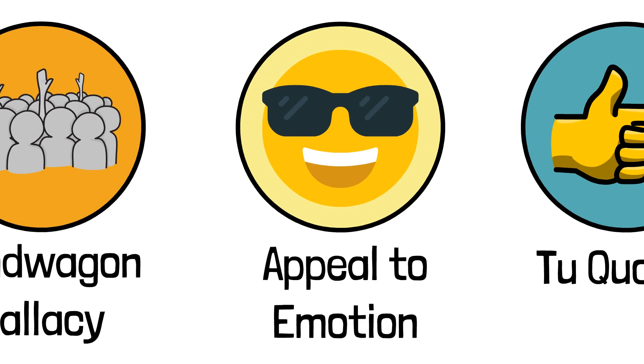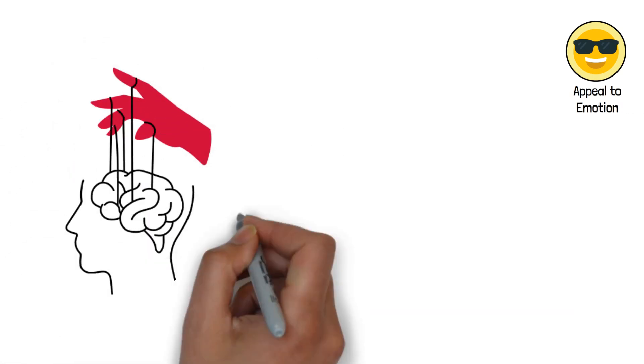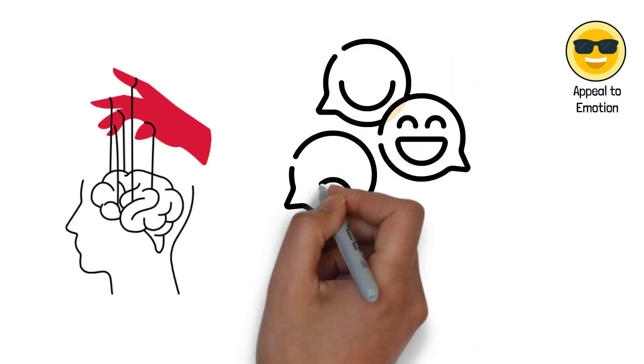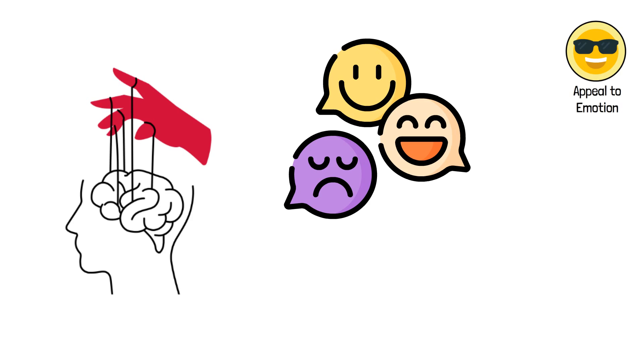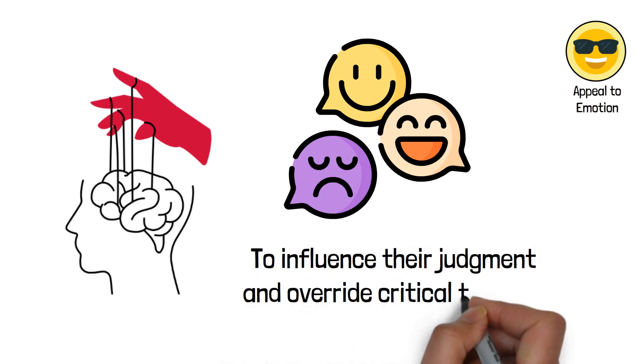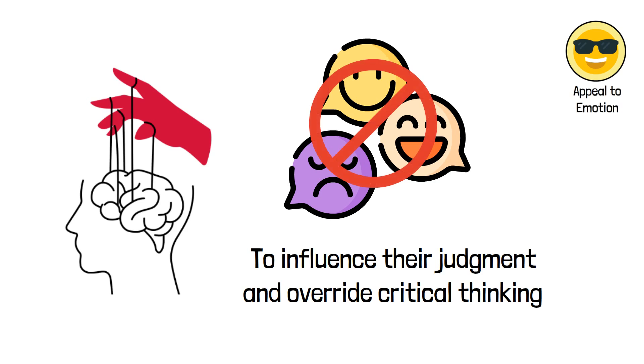12. Appeal to Emotion. This fallacy involves manipulating emotions to win an argument, rather than relying on logical reasoning or evidence. It appeals to the emotions of the audience, such as fear, pity, or anger, to influence their judgment and override critical thinking. While emotions can play a role in decision-making, they should not be the sole basis for evaluating the validity of an argument.